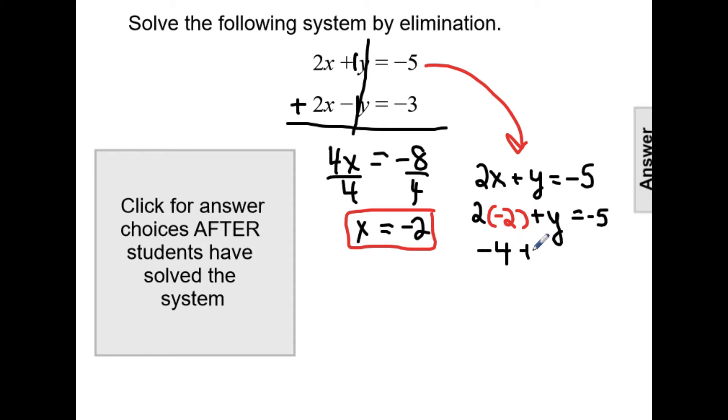Negative 4 plus y equals negative 5. If I add 4 to both sides, then y equals negative 1.